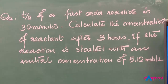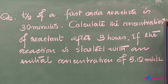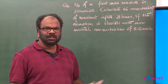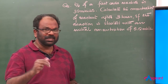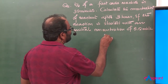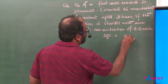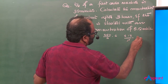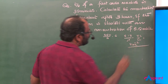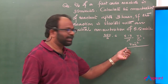Problem 2: The half-life of a first order reaction is 30 minutes. Calculate the concentration of the reactant after 3 hours, if the reaction is started with an initial concentration of 5.12 moles per liter. The answer is 0.08 moles per liter.